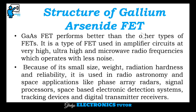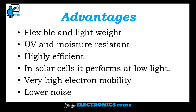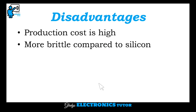Next is the gallium arsenide field effect transistor (FET). Here also, instead of silicon, gallium arsenide is used. The gallium arsenide FET performs better than other types of FETs. It is a type of FET used in amplifier circuits at very high, ultra high, and microwave radio frequencies, which operates with less noise. Because of its small size, weight, radiation hardness, and reliability, it is used in radio astronomy and space applications like phased array radar, signal processors, space-based electronic detection systems, tracking devices, and digital transmitter-receivers. The advantages are: flexible and lightweight, UV and moisture resistant, highly efficient in solar cells, performs at low light, very high electron mobility, and lower noise. Disadvantages are: production cost is high and it is more brittle compared to silicon.